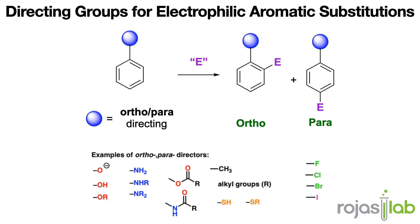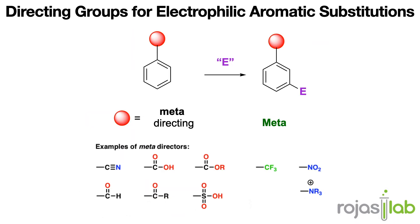In pattern one, substituents direct the reaction to give either ortho or para products, with a slight preference for para. Examples of ortho and para directors are hydroxyl groups, ethers, amines, alkyl groups, thiols, and halogens.